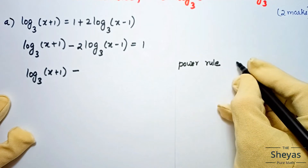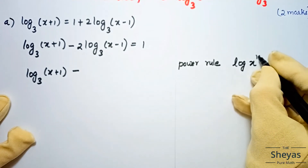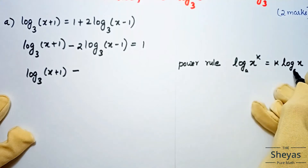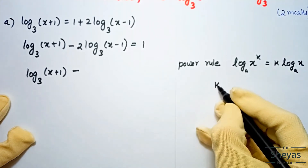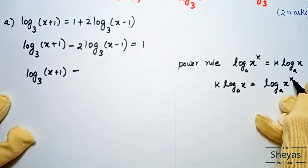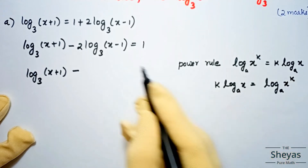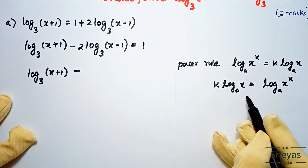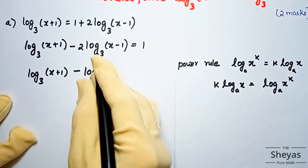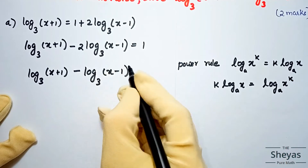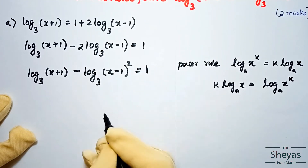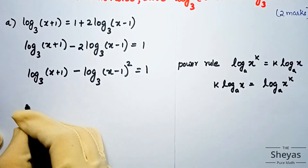The power rule states: log base a of x^k = k · log base a of x. Equivalently, if it is of the form k · log_a(x), we can write it as log_a(x^k). In this problem, the 2 in front of log base 3 of (x-1) means we can rewrite that term as log base 3 of (x-1)², giving us log(x+1) minus log(x-1)² = 1.